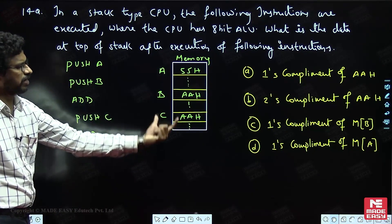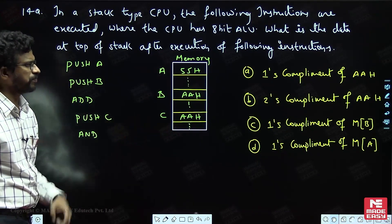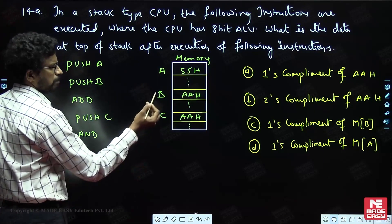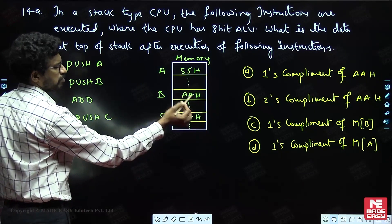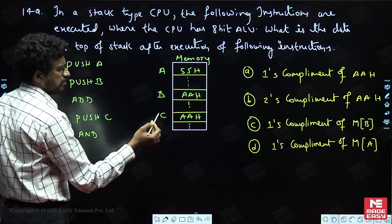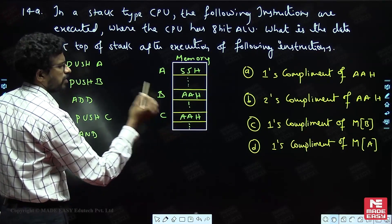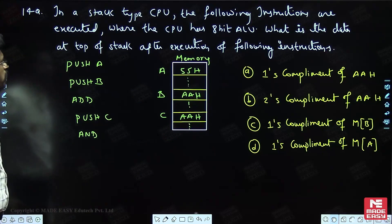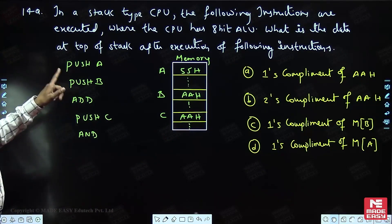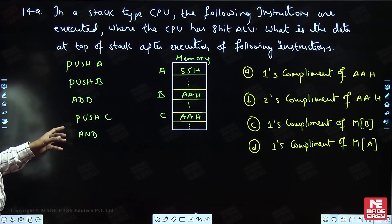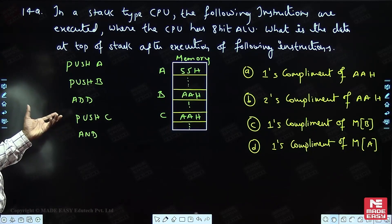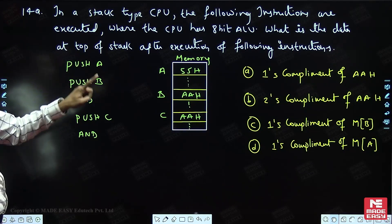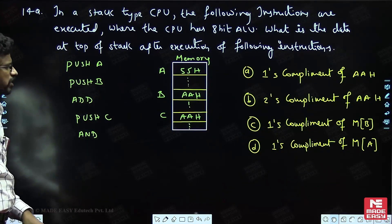This is the data given in the memory. A is the memory address of some data, B is the memory address of some data, and C is the memory address of some data. For this set of instructions, you have to understand what is the data present at the top of the stack.